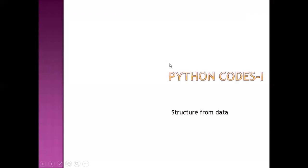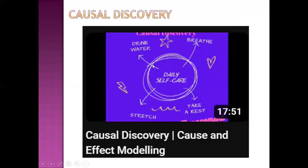Python code 1 is structure from data. We can identify the structure of a Bayesian network from data — this is nothing but causal discovery. I have a full-fledged lecture on causal discovery on my YouTube channel.